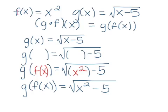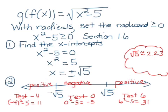So whenever we have radicals and we want to find the domain, we take whatever is under the radical sign, set that greater than or equal to zero because we only want positive results, and we're going to do the sign test. So we did the sign test in section 1.6, so with x squared minus 5 is greater than or equal to zero, section 1.6.